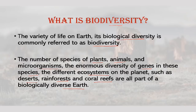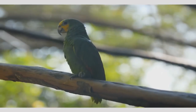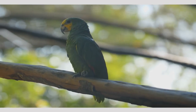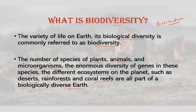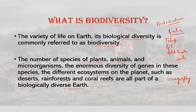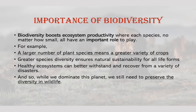Biodiversity is not evenly distributed — it varies greatly across the globe as well as within regions. Among other factors, the diversity of living organisms constituting your biota depends upon temperature, precipitation, altitude, soils, geography and the presence of other species. The study of the spatial distribution of organisms, species and ecosystems is the science of biogeography.